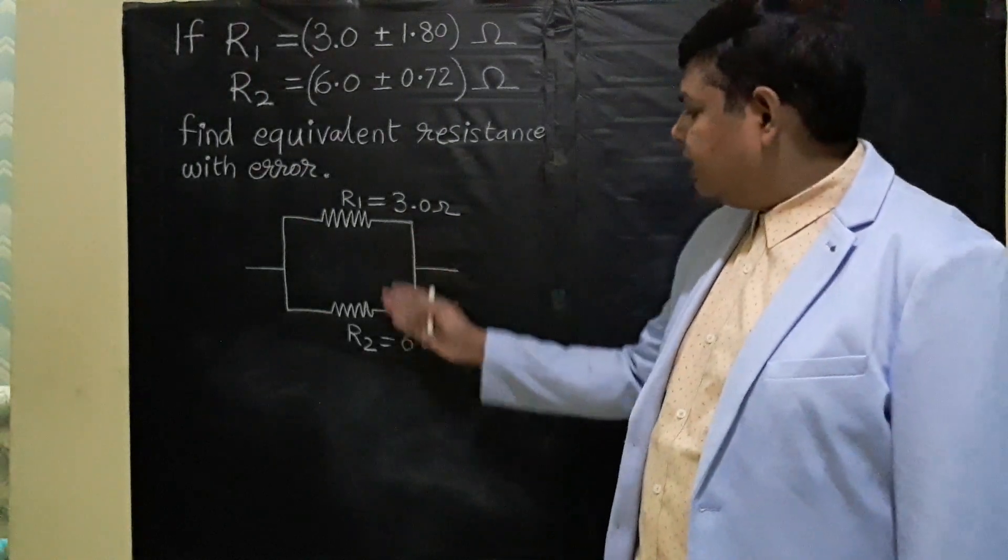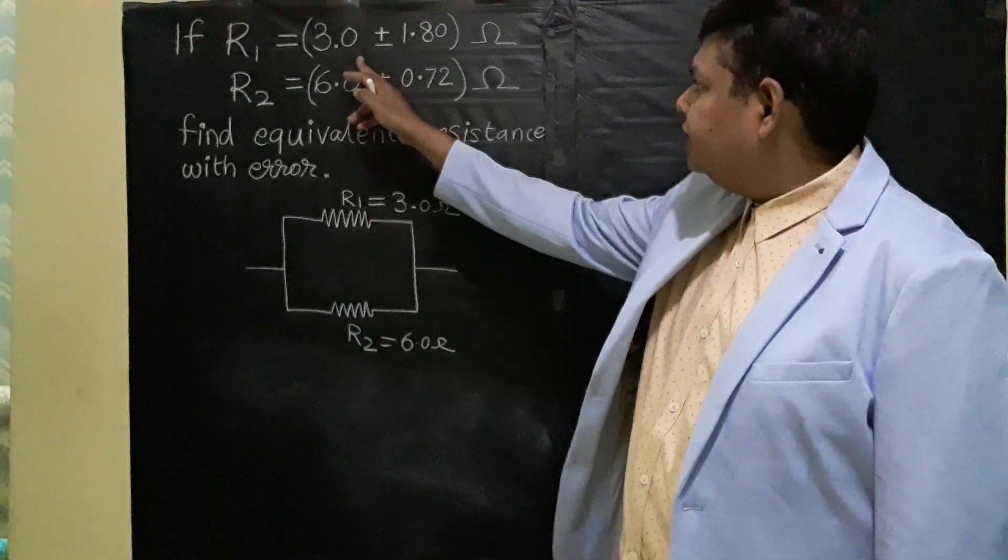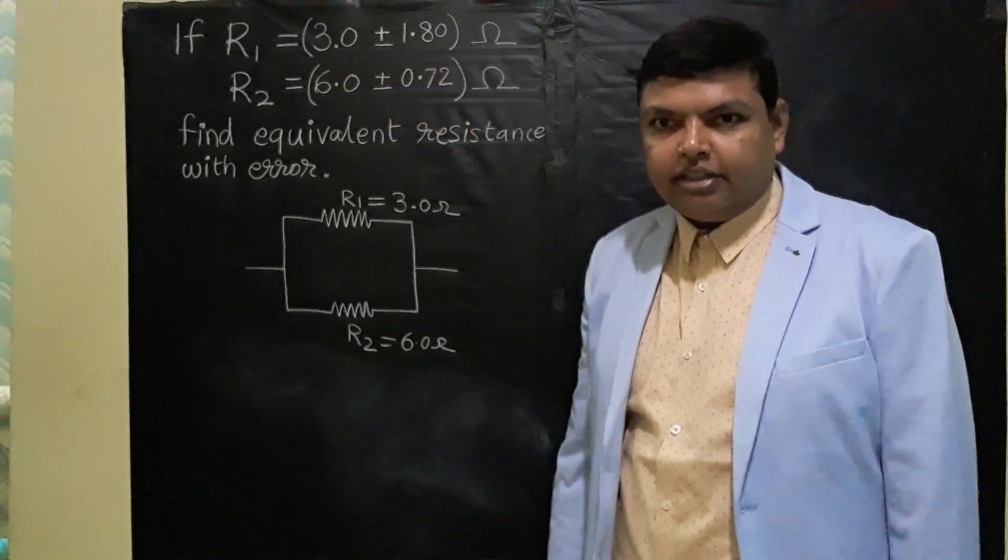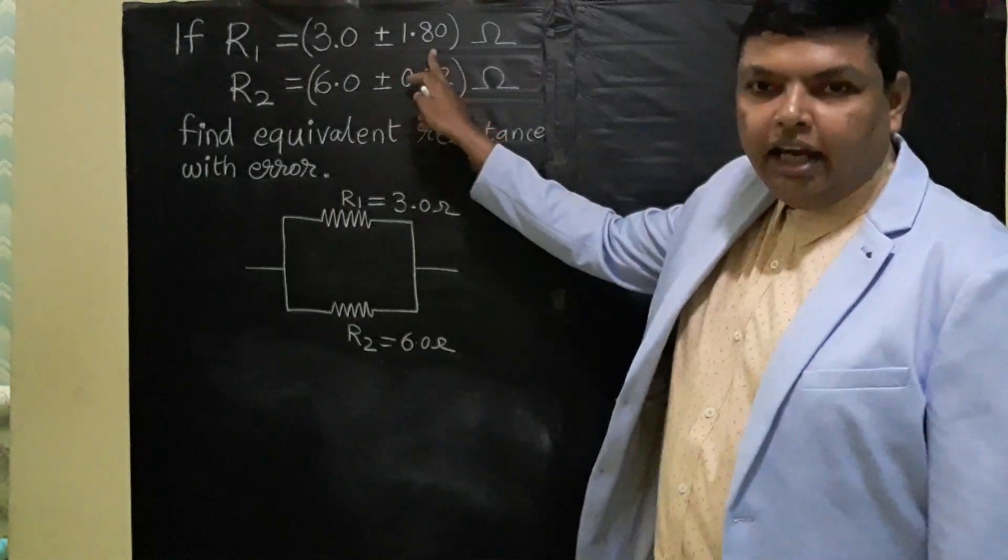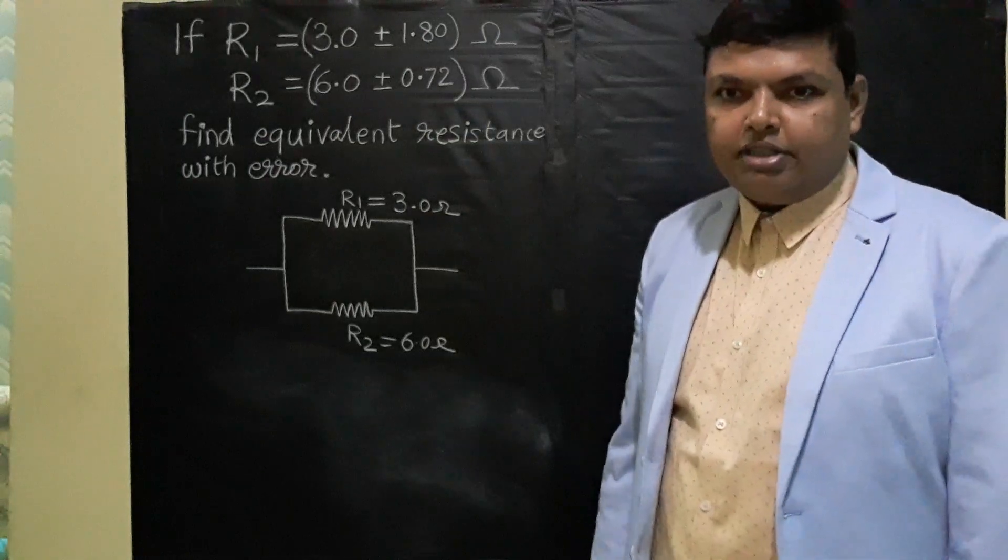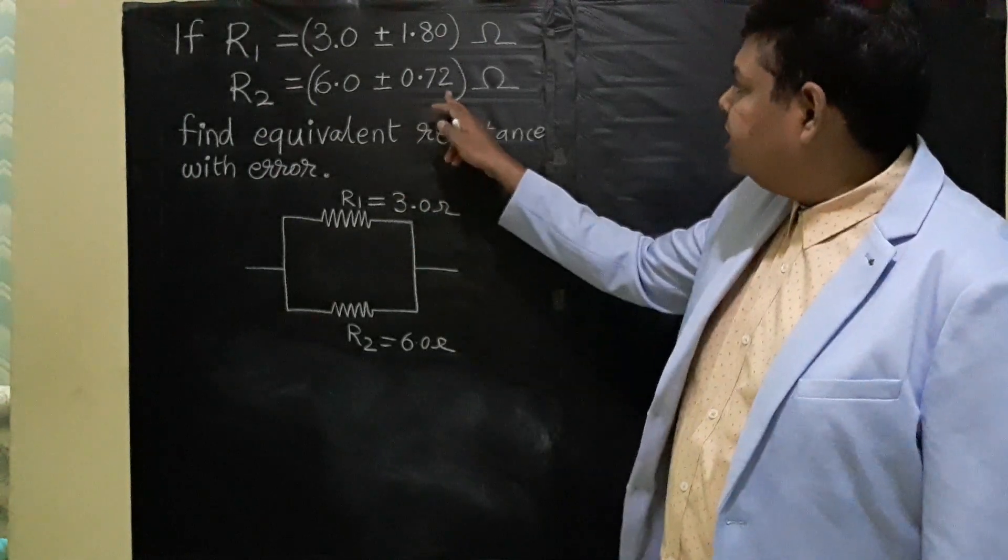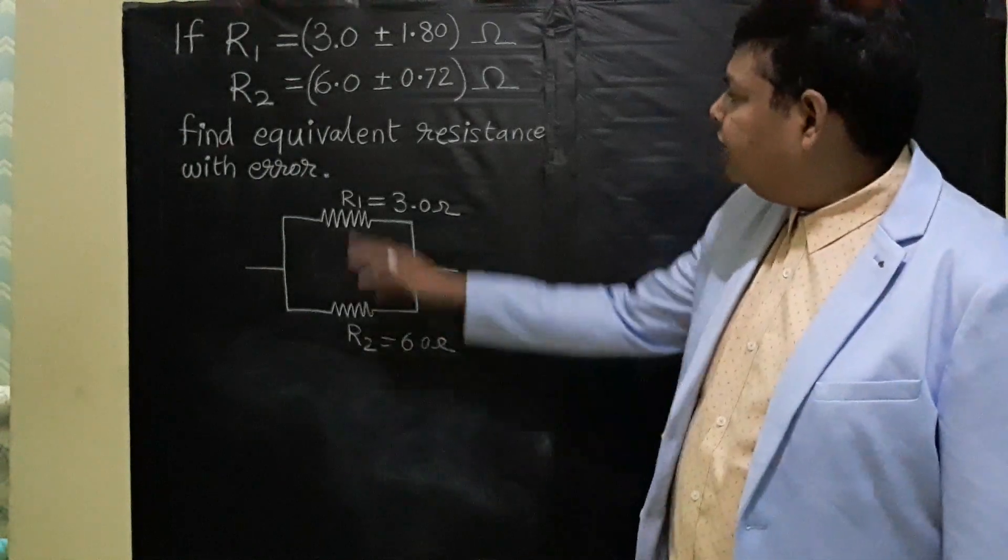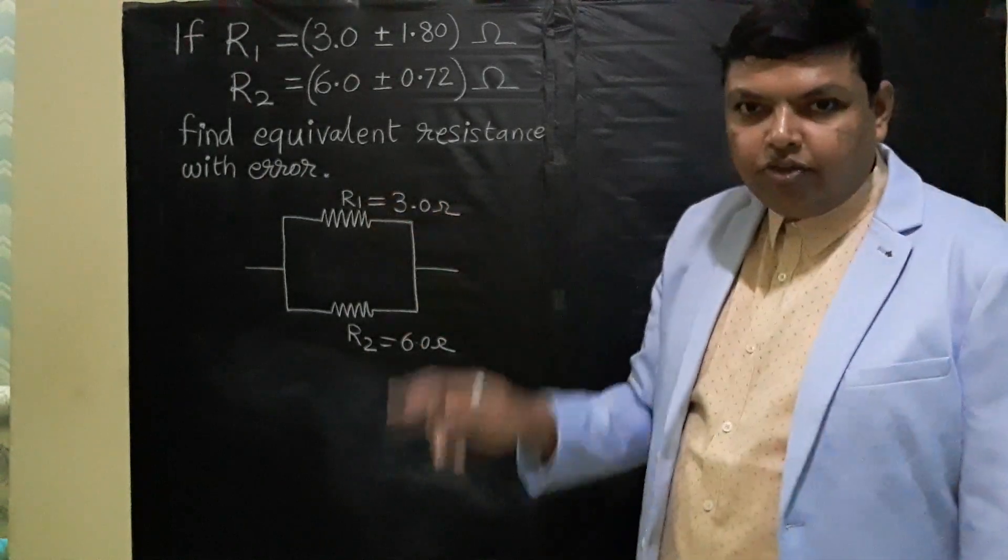Here two resistances are given in parallel. Their values are written here. R1 is 3.0 ± 1.8 ohms, where 1.80 is the error in the first resistance. Similarly R2 is 6.0 ± 0.72 ohms, where 0.72 ohm is the error in the measurement of the second resistance. So we have to find the equivalent resistance along with the error.